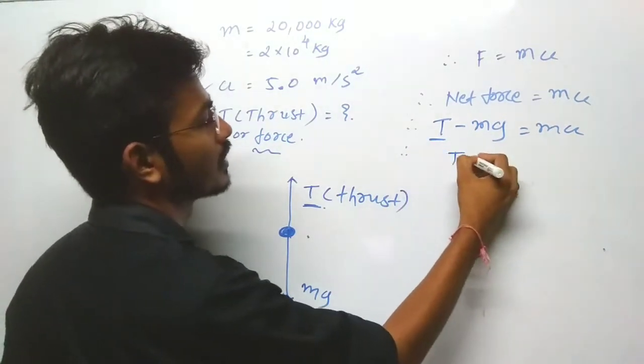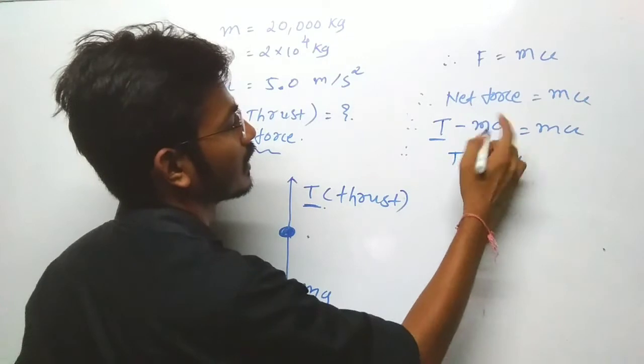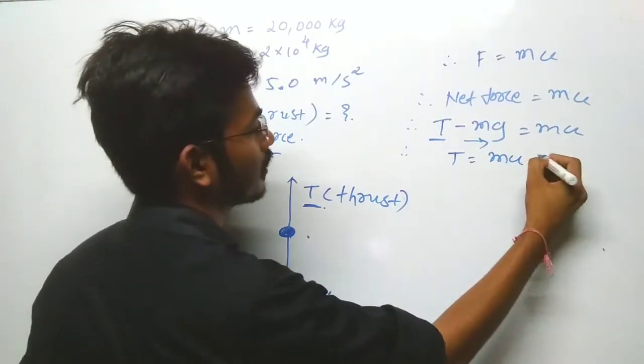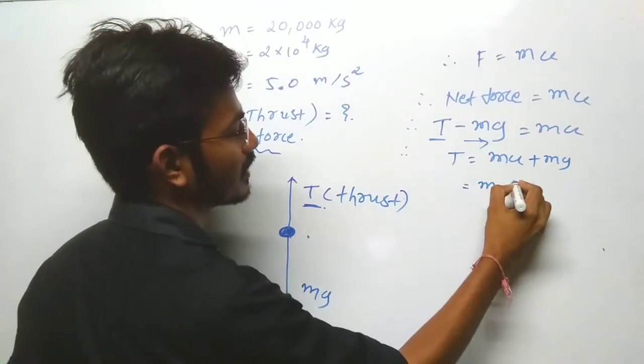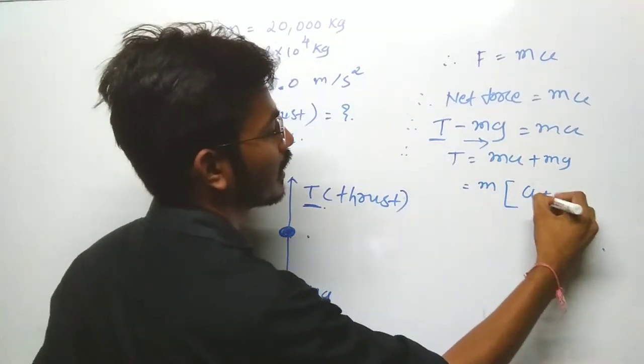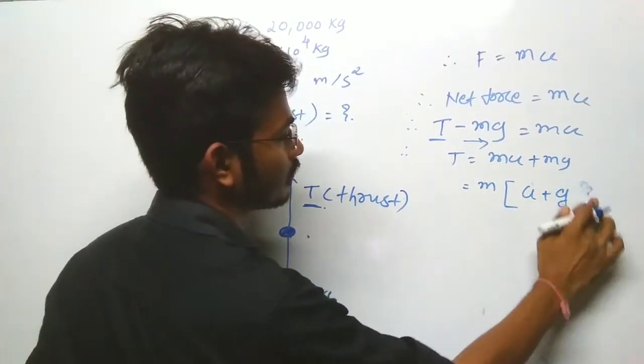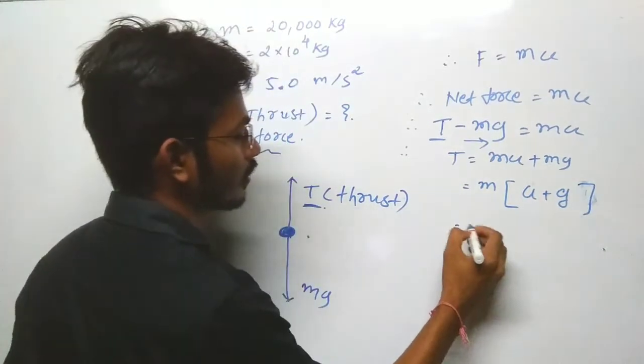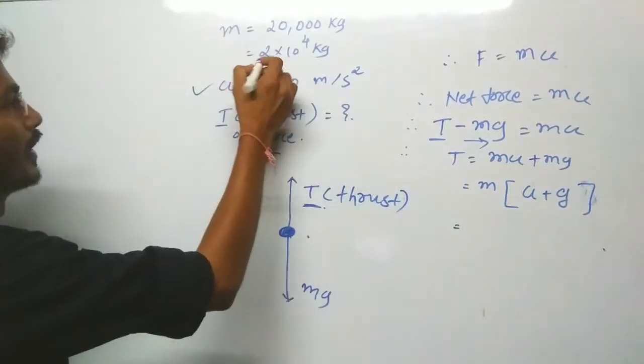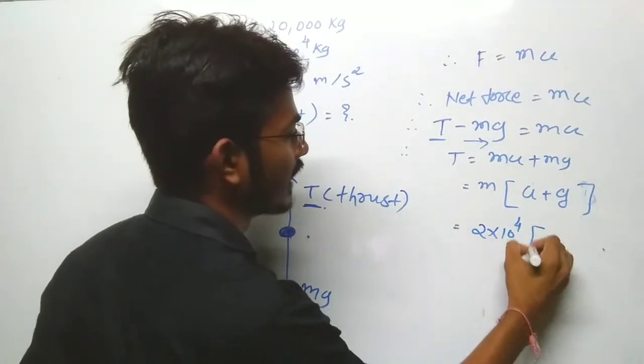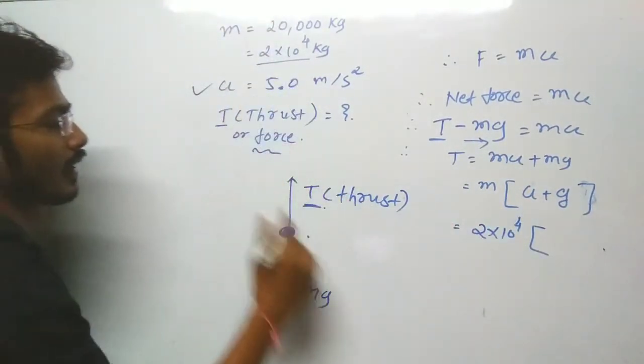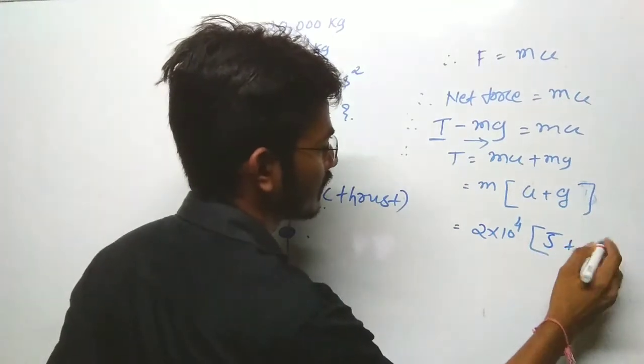So T = m(a + g). The value we already know: 2×10⁴, inside the bracket, acceleration 5 plus g, we consider as 9.8. Simplification: 2×10⁴...